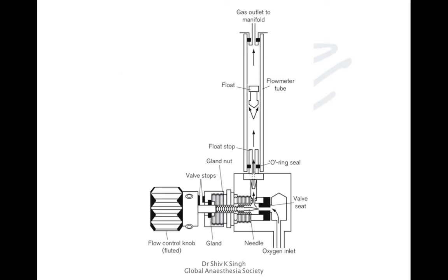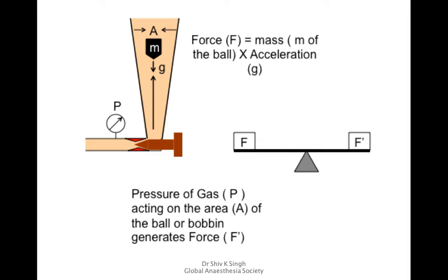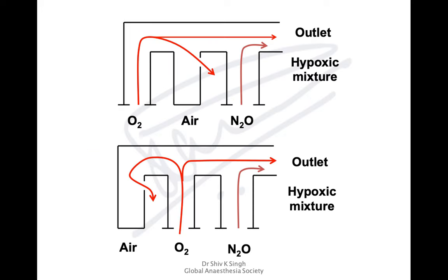The float works on the principle that force equals mass times acceleration — the mass of the bobbin acted on by gravity is force one. The second force is the pressure of the gas acting on the area of the bobbin. These two forces balance each other. When you increase flow, pressure increases and the float moves up; decrease flow, the force over the bobbin's area reduces and the float comes down — the same principle as the pressure regulator.